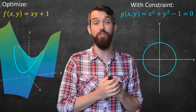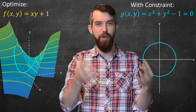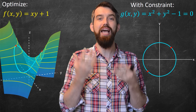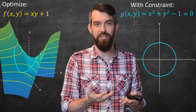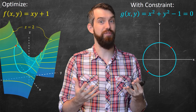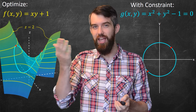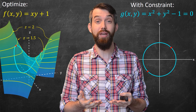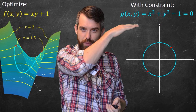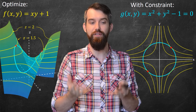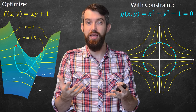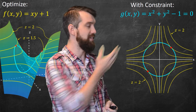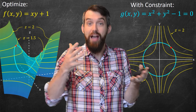It also looks like there are two minimums as well. To help understand what's going on, I've put contours on the graph of the function. Remember, a contour means the height is constant — I'm setting the function value of xy + 1 equal to various constants to get level curves. For instance, setting z = 2 gives one curve, z = 1.5 gives a different curve, and so on. This gives a bunch of level curves.